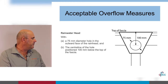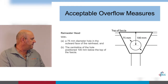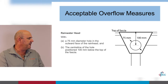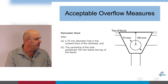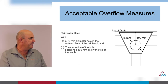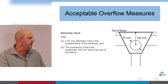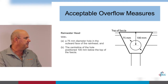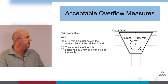Acceptable overflow measures on a rainwater head: the rainwater head is fitted with a 75mm diameter hole in the outward face, with the centre positioned 100mm below the top of the fascia. When fitting rainwater heads, we must make sure the box gutter is fully sealed to the rainwater head — not just entered and turned down. They must be fully sealed.